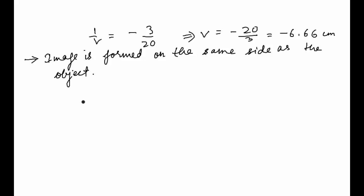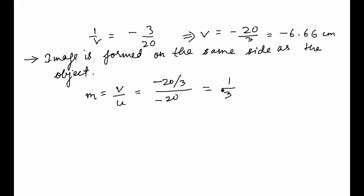Now let's find the magnification. Magnification equals v/u, which is (minus 20/3) divided by (minus 20), giving us 1/3. Since the magnification is positive, the image is virtual and erect.